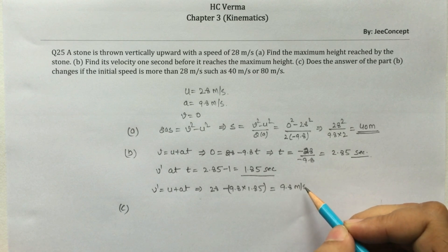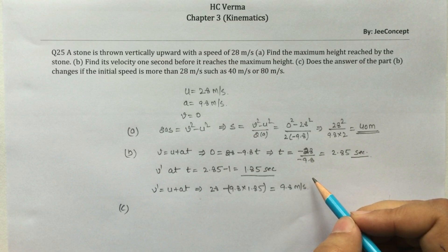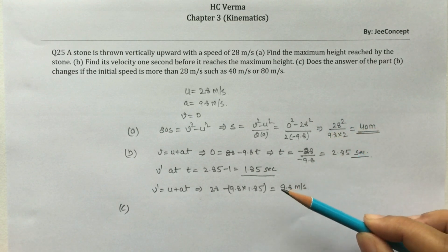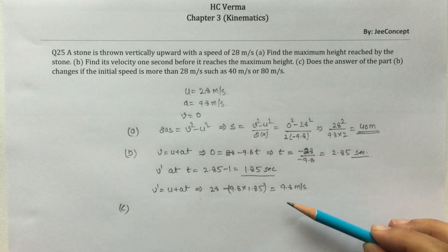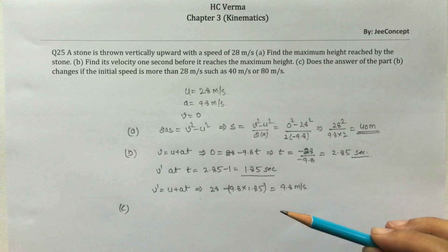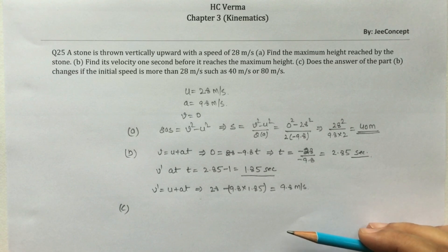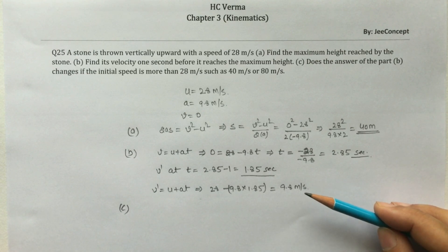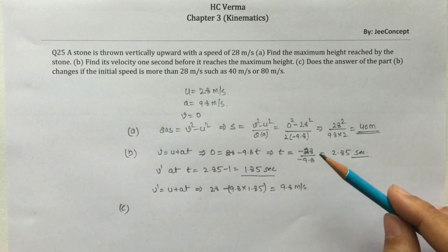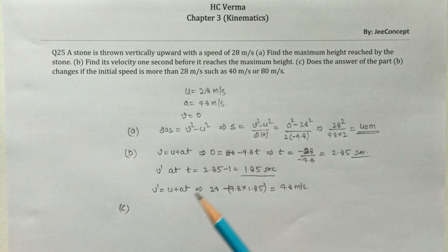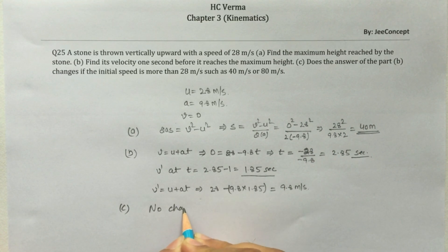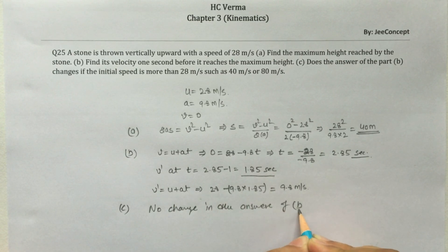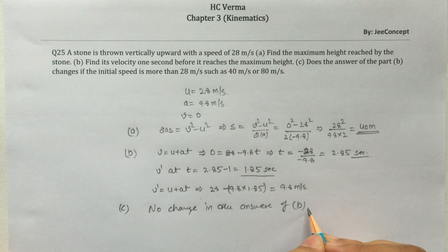For part C: just one second before reaching maximum height, the speed is 9.8 m/s, and after one second the velocity is zero. If the stone is thrown at 40 or 80 meter per second, the velocity just one second before maximum height will always be 9.8 meter per second, because acceleration due to gravity reduces velocity by 9.8 m/s every second. So there is no change in the answer of part B.